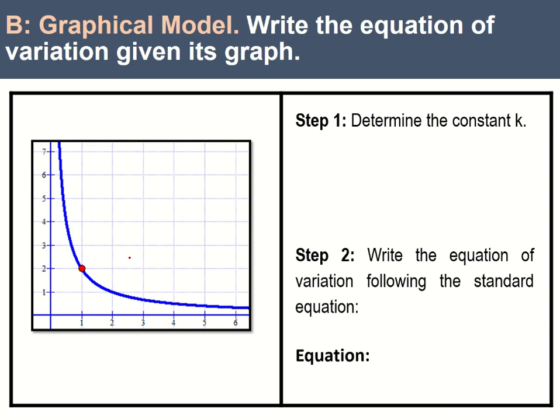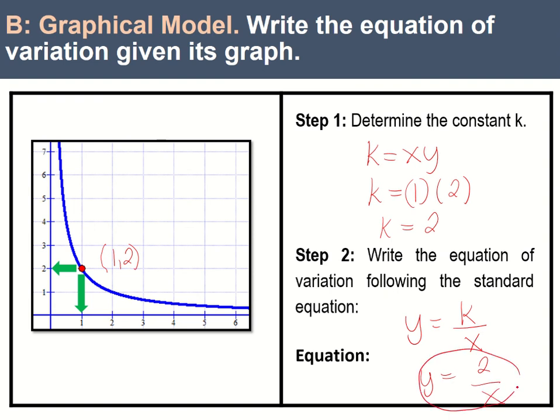So, how do we write the equation for this graph? First is we determine the constant by selecting a point on the graph. As what I've told you, just select a point in which we can locate it in the intersection of the grids. So, let's have this point. What is its x-coordinate? Its x-coordinate is 1. And how about its y-coordinate? The y-coordinate is 2. So, how to get the constant? We have multiply x and y. So, we have k now is x is 1 times y which is 2. So, k now is equal to 2. Then we can now write the equation by substituting k in y equals k over x. So, we have y is equal to 2 over x. Very easy.